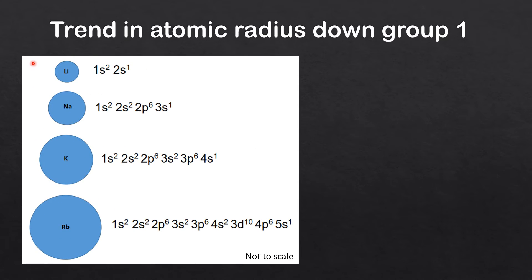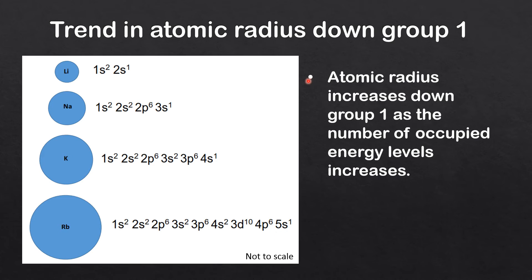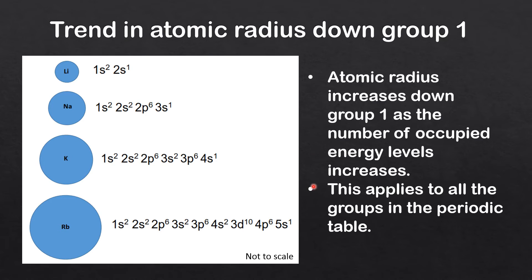Looking at the trend in atomic radius down group one, we have the first four elements: lithium, sodium, potassium, and rubidium. As you go down the group the atomic radius is increasing. Looking at the electronic configurations, lithium has two occupied energy levels, sodium has three, potassium has four, and rubidium has five. So atomic radius increases down group one as the number of occupied energy levels increases, and this applies to all groups in the periodic table.